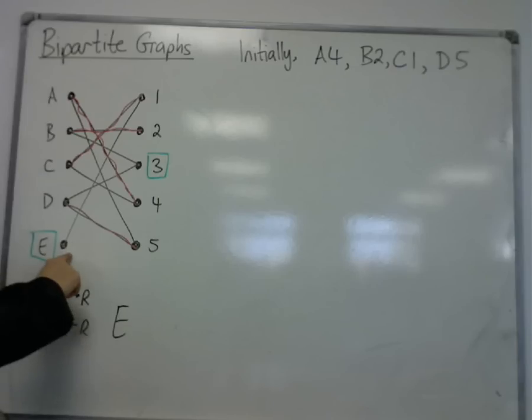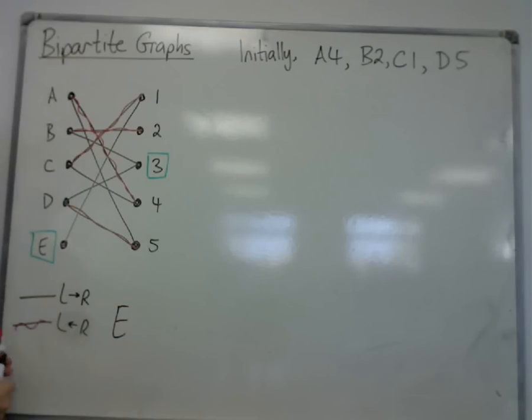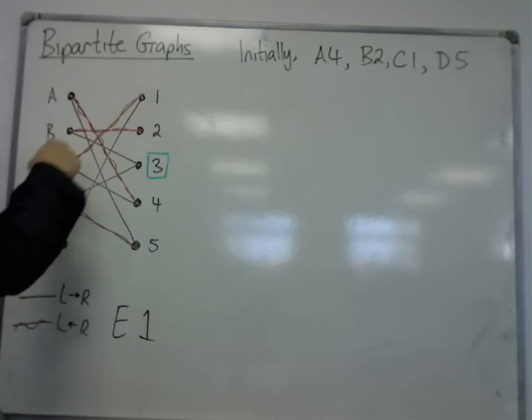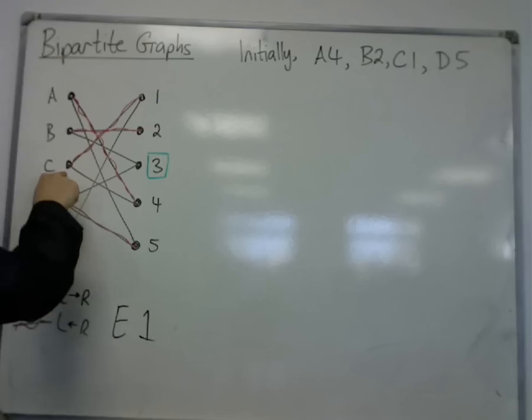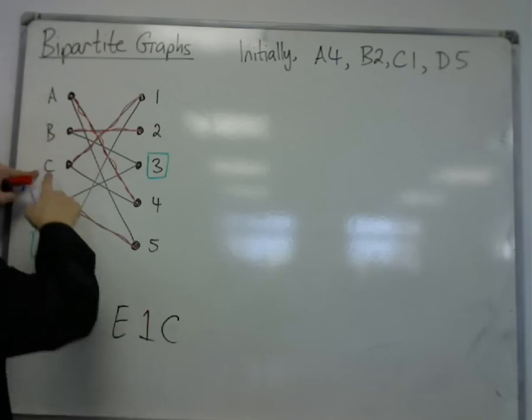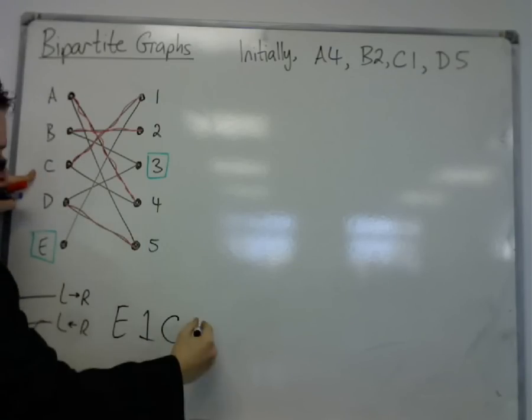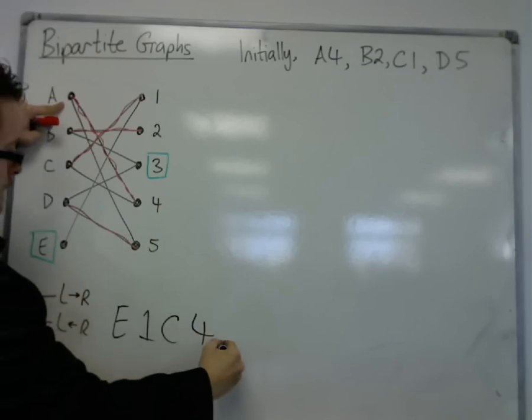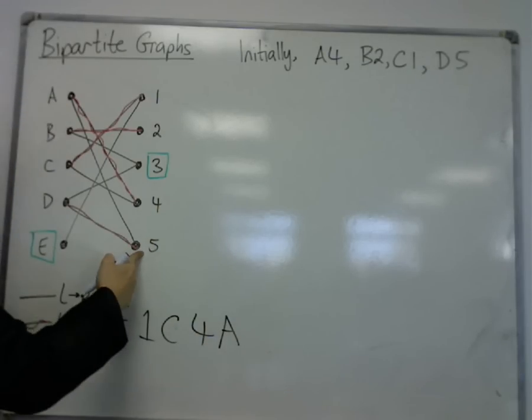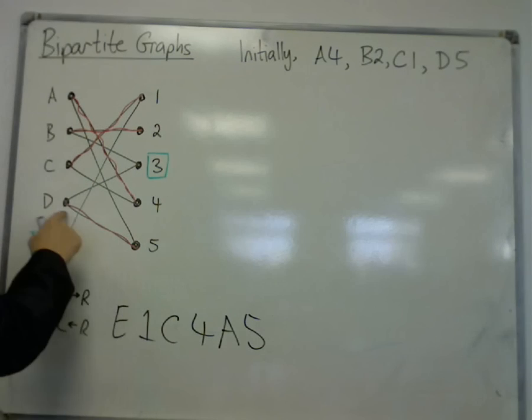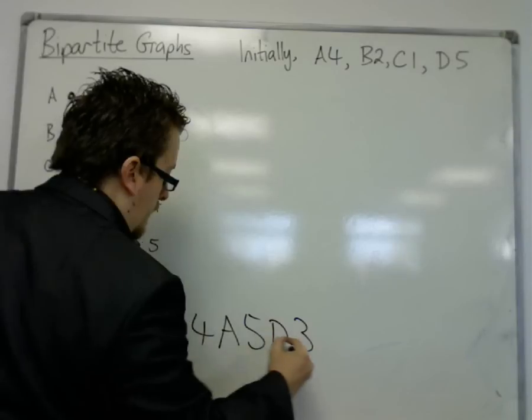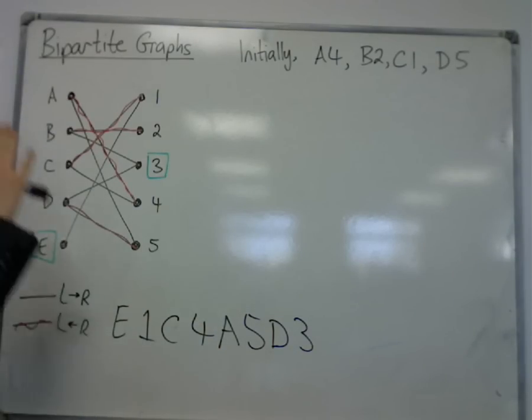So from E, I must then travel to one. That's the only way I can go, so I go to one. Then from one, the only route out is to get to C because I can travel from right to left along the red lines. That gets me to C. Then I have to go from C to four, then from four to A, then from A to five, then from five to D, and then from D to three. So that's now found me a route, an alternating path that gets me from E to three.